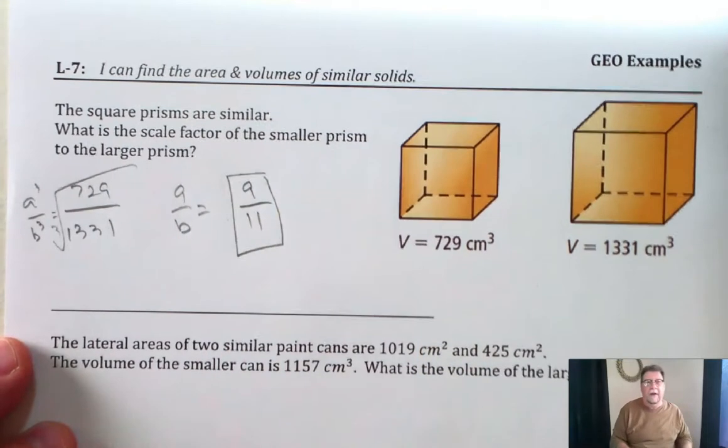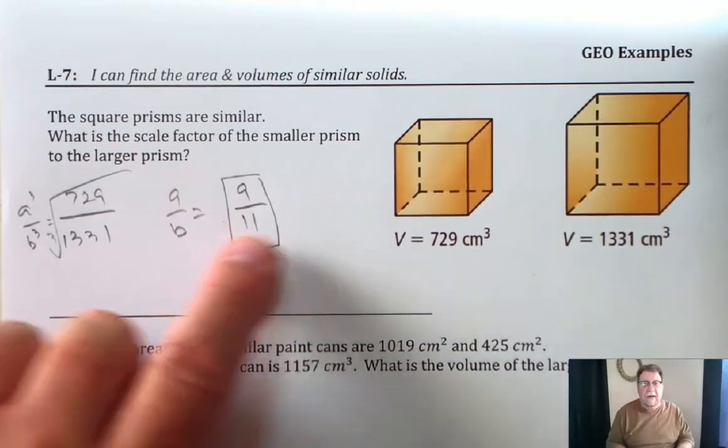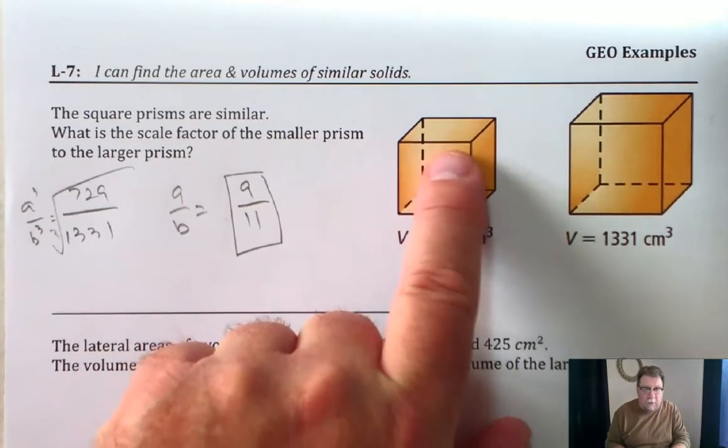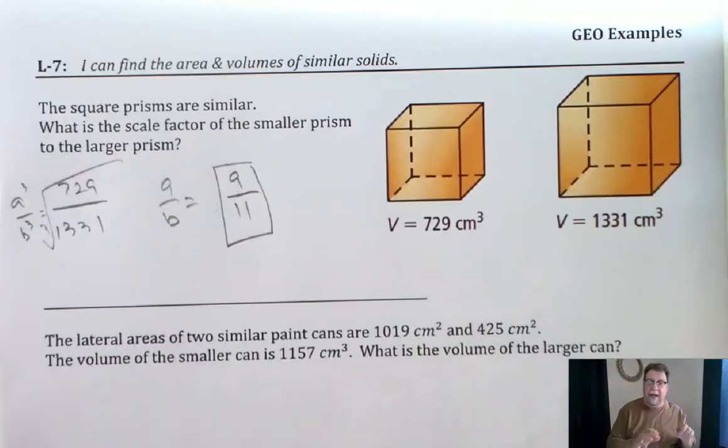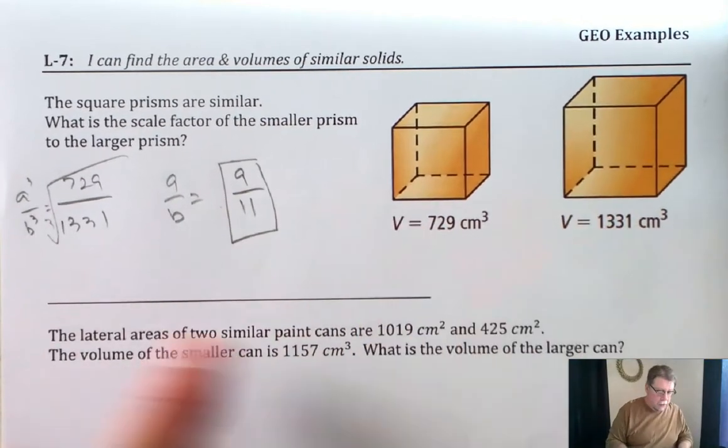So 9 over 11 would be the actual scale factor of this length to the length of this. So the length of one side to that has a scale factor of 9 over 11. And again, we got that by taking the cubed root of these two numbers when we compared them.